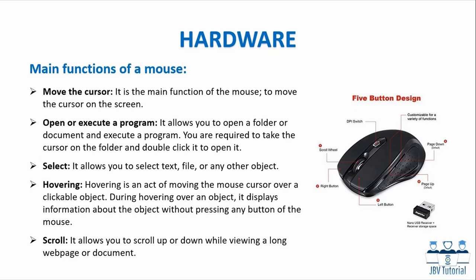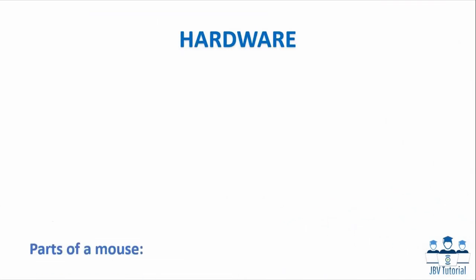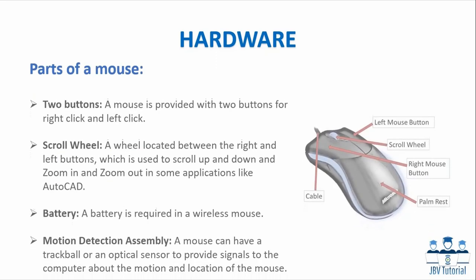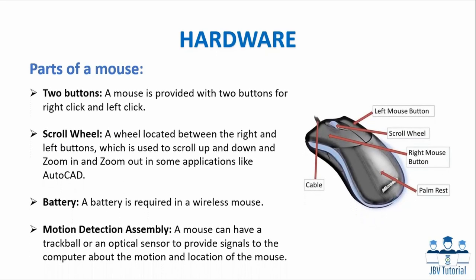Scroll: It allows you to scroll up or down while viewing a long web page or document. Parts of a mouse: Two buttons for right-click and left-click. Scroll wheel: located between the right and left buttons, used to scroll up and down and zoom in and out in some applications like AutoCAD. Battery: required in a wireless mouse. Motion detection assembly: a mouse can have a trackball or an optical sensor to provide signals to the computer about the motion and location of the mouse.